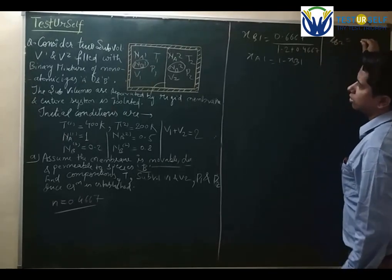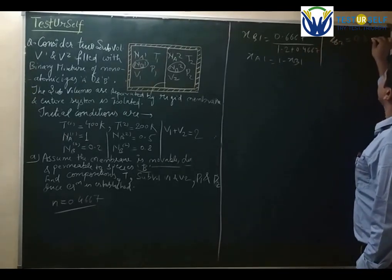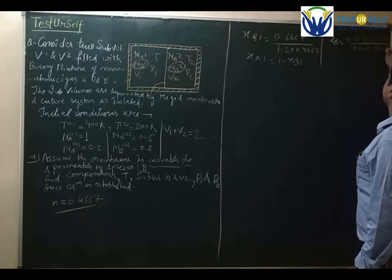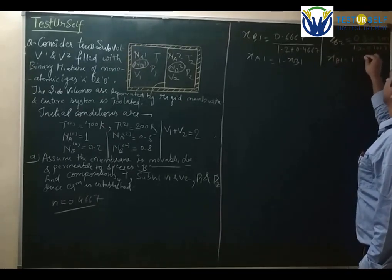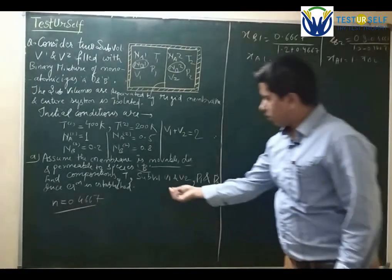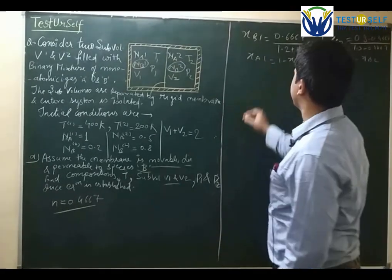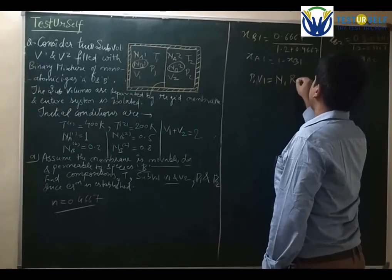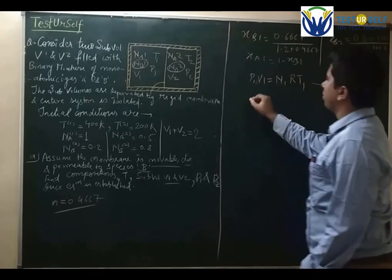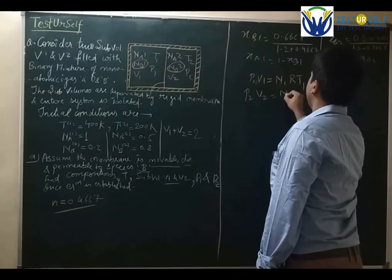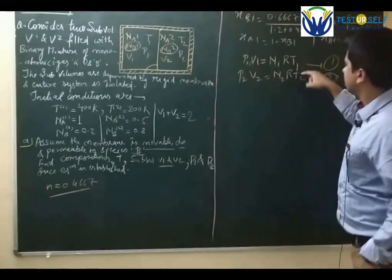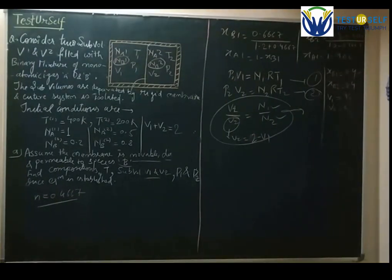Similarly, xB2 equals (0.8 − 0.4667) divided by (1.3 − 0.4667), and xA2 can be found. Now working out volume: writing the ideal gas equation, P1·V1 equals N1·R·T1 for compartment 1, and P2·V2 equals N2·R·T2 for compartment 2. Dividing both equations — since pressures are equal and temperatures are equal — the final answers are xB1 equals xB2 equals 0.4, and V1 equals 2/3 of the total volume.